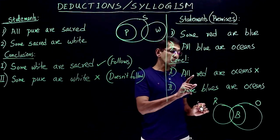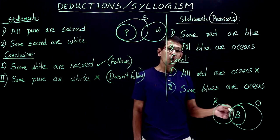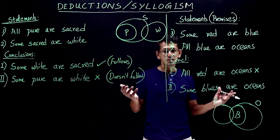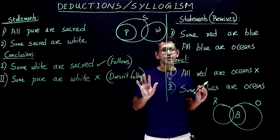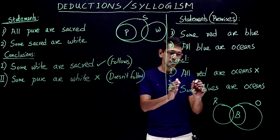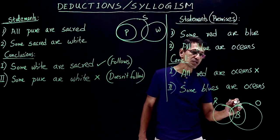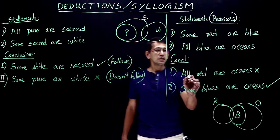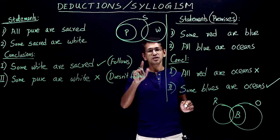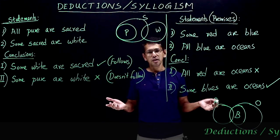Conclusion 2: some blue are oceans. All blue are oceans, so if you take some blue from there, they are definitely oceans. It's like saying all buses are passenger vehicles — then some buses are definitely passenger vehicles. So some blue are oceans is valid, it follows. Conclusion 1 doesn't follow and conclusion 2 follows, so mark your answer as B.